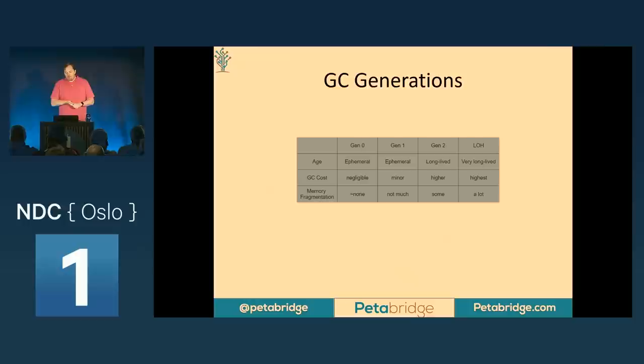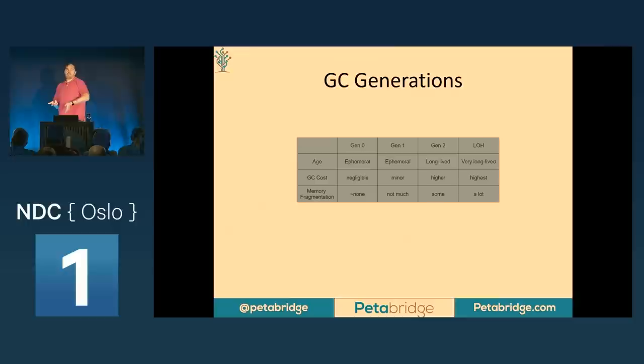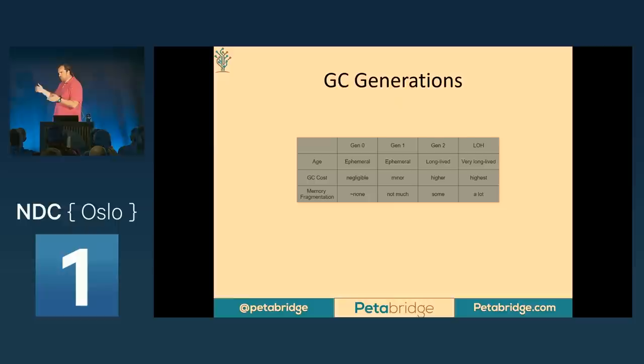We have four generations of garbage collection in .NET. First is Gen Zero — the cheapest — for ephemeral objects. The higher the generation, the more expensive it is to run. For example, if you allocate a string inside the scope of a function, do some work with it, write it out to the console, and then the function exits, that's going to be Gen Zero collected. We allocate that object at the top of the heap and then immediately take it off again without needing a complex rooting calculation, so it's very cheap and doesn't require compaction.